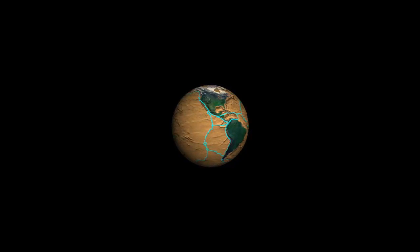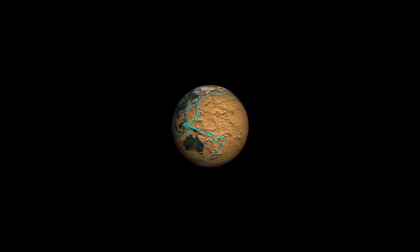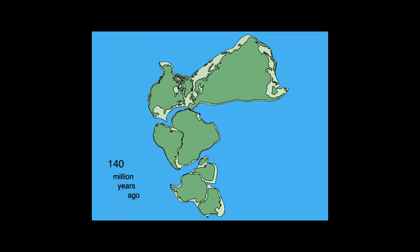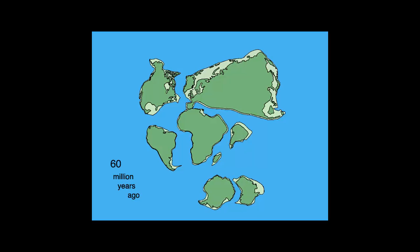The tectonic plate theory started as an idea from Alfred Wegener in 1912. He noticed that the shapes of the Earth's continents allowed them to fit together into one giant continent, much like a jigsaw puzzle. He called this giant continent Pangea, which means all lands.